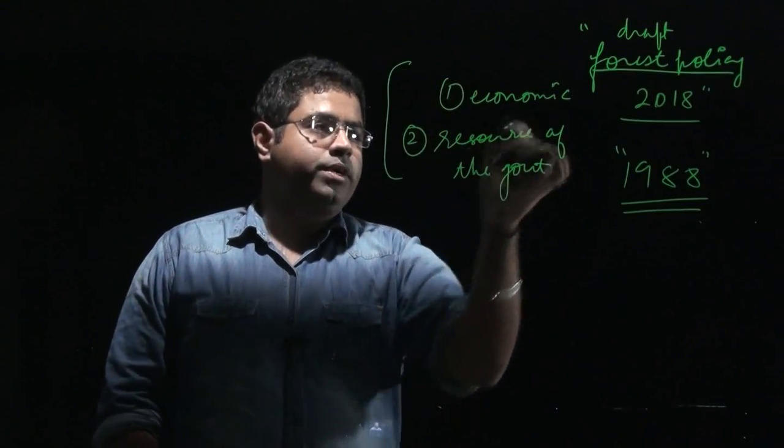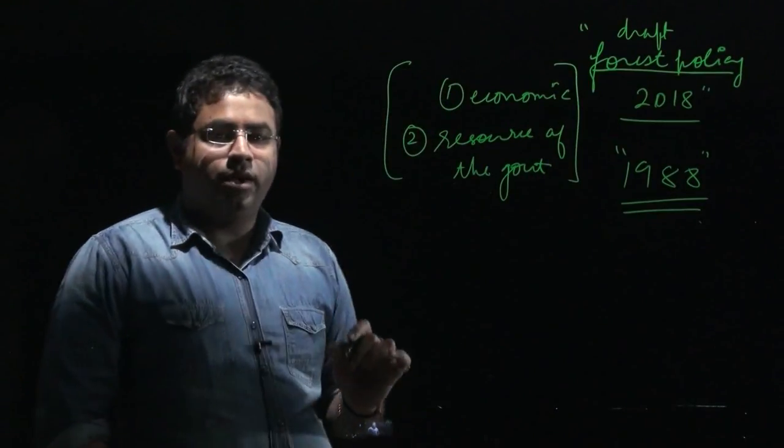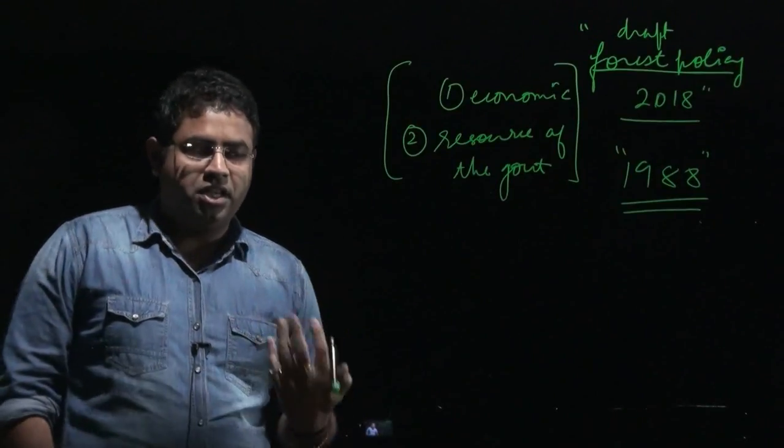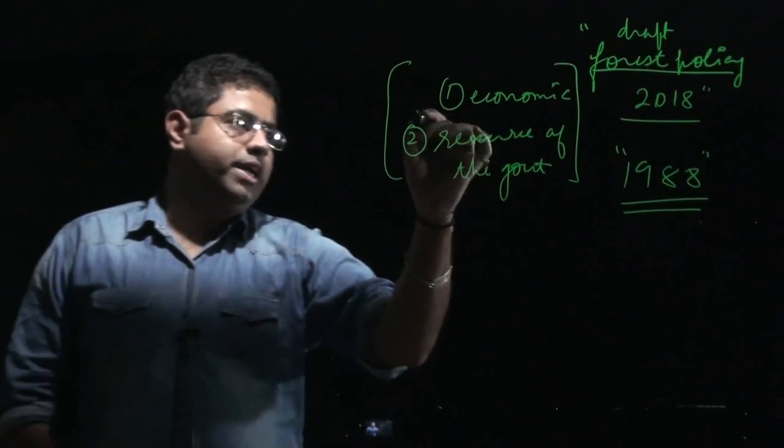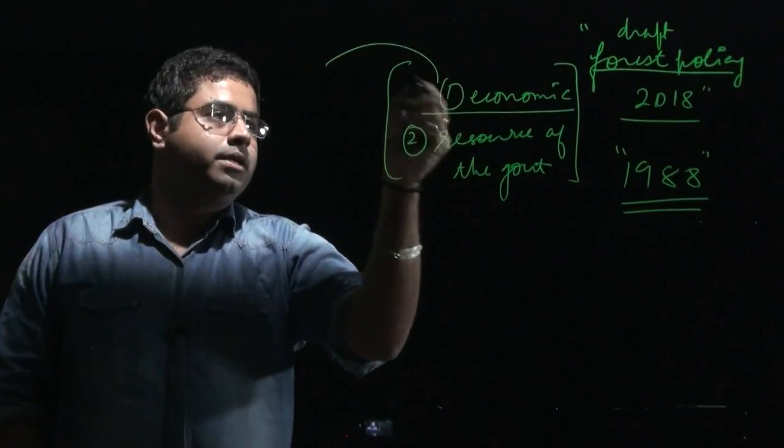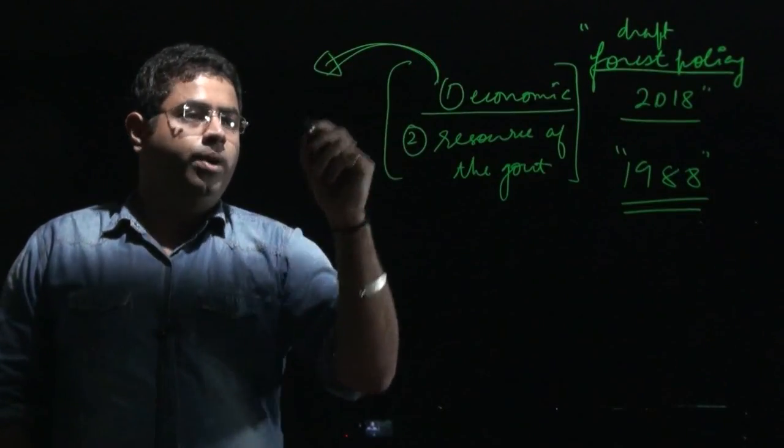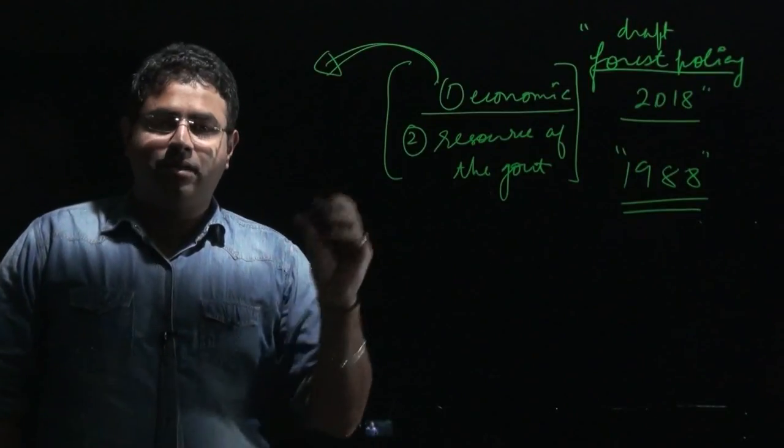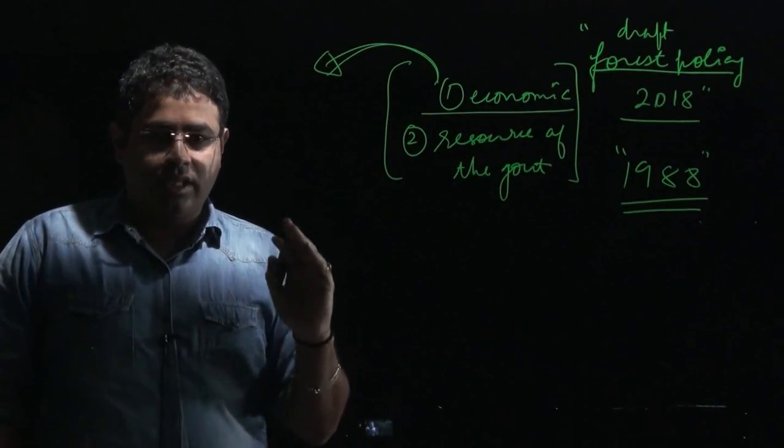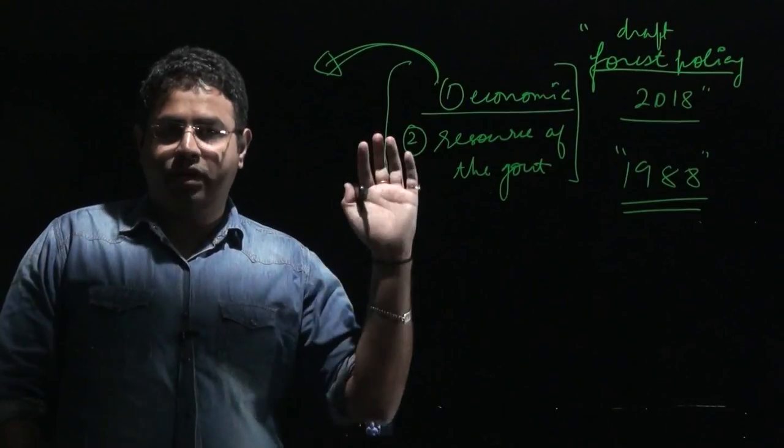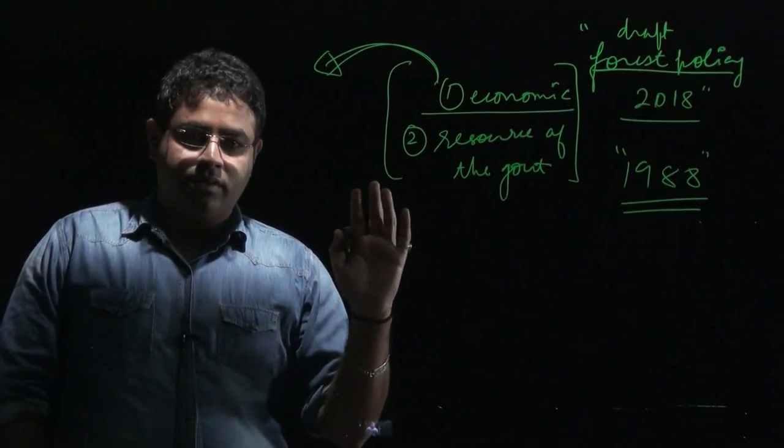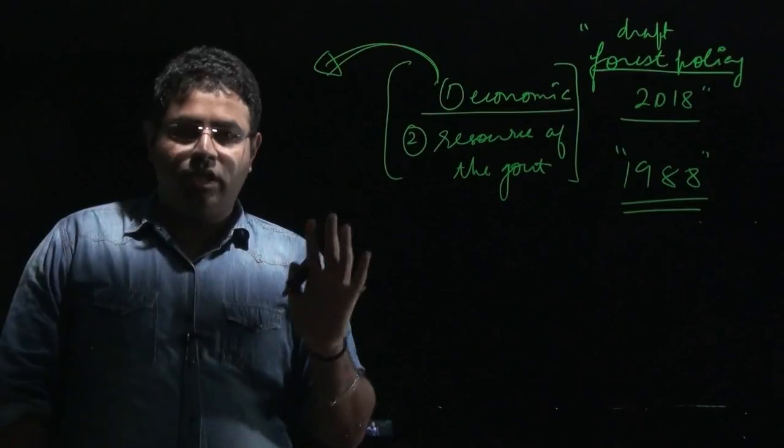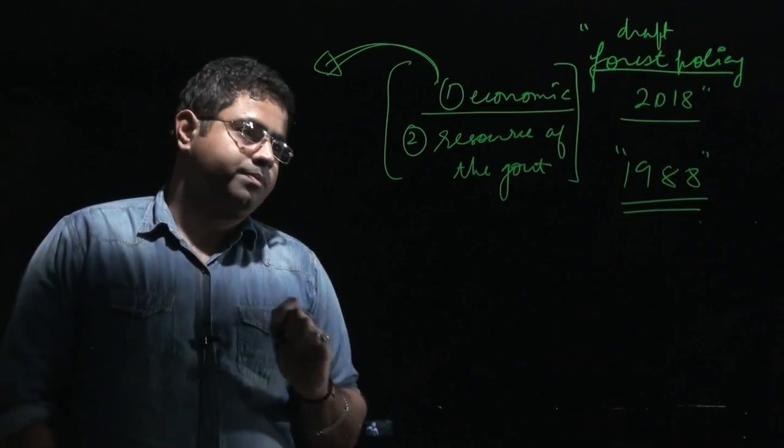These two important things have guided our relationship with the forest. Because we viewed forests as an economic entity, we have been recklessly exploiting forests. This has done a lot of damage to the forest - ecological damage. We have lost the biodiversity and the diversity of the forest.